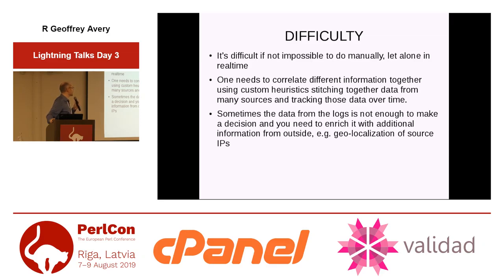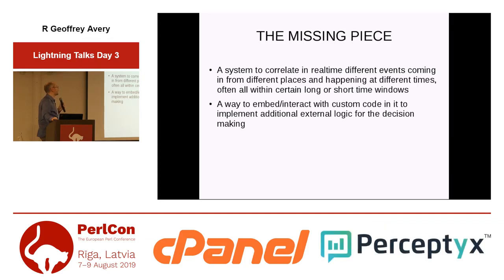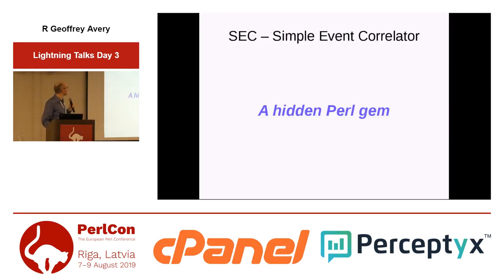Ideally you'd need to correlate different information together using custom heuristics, stitching together data from many sources and tracking it over time. Sometimes that's not even enough — you have to enrich it with additional information from outside, for instance geolocating source IP addresses. So we get to a missing piece: a system able to correlate in real time different events coming from different places, happening at different times within a certain time window, with a way to embed custom code for additional decision-making logic.